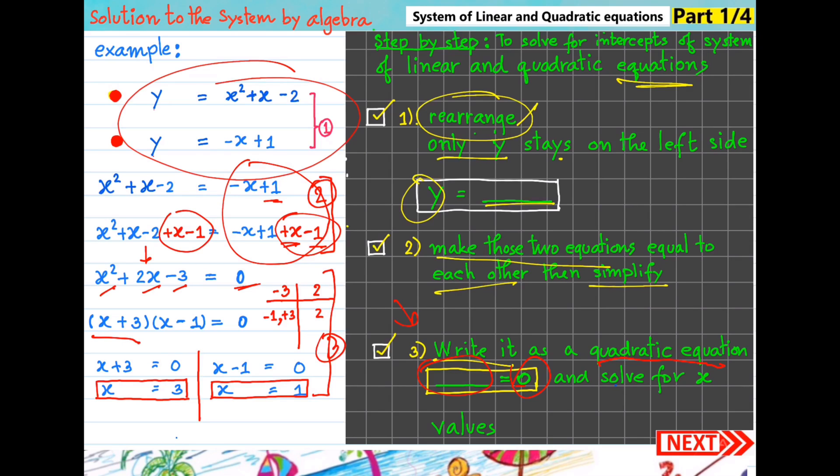And then we use factoring method. We got x plus 3, then x minus 1. Because what times what equals minus 3? The answer is minus 1 and plus 3. What combined together gives us 2? Minus 1 combined with plus 3, we obtain 2. So x plus 3 equals 0, then x equals 3. x minus 1 equals 0, then x equals 1.